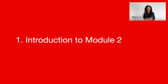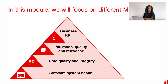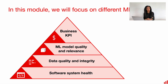In this module we will focus on different machine learning monitoring metrics. Previously we discussed that there are at least four different groups of metrics which we are monitoring. These are software system health, data quality and integrity, machine learning model relevance and quality, and business KPIs.